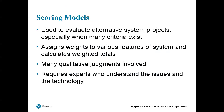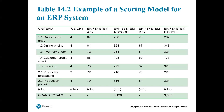Some project managers use a scoring system to evaluate alternative projects — it gives a weight to features of the system and produces a calculated score. This is an example from our text of a scoring model for an ERP system, with criteria on the left side, a weight column, percentages, and an overall score.